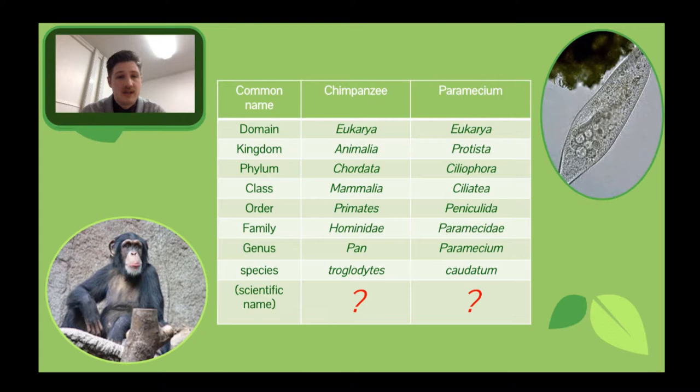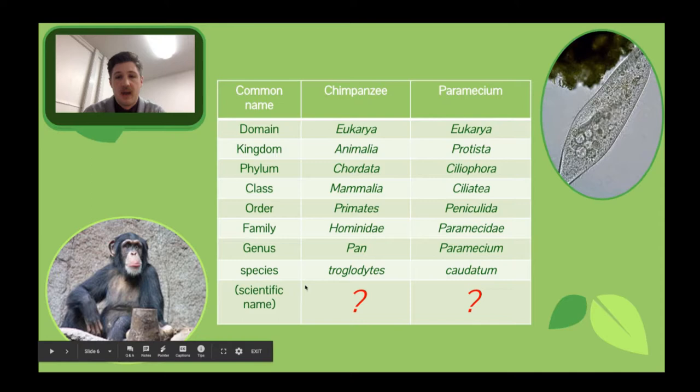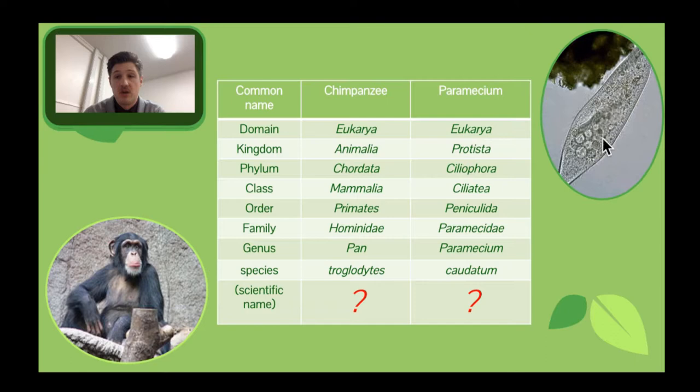So what are the scientific names of these two animals? Here we have our friendly chimp and this amoeba-looking thing. For our chimpanzee we have Pan troglodytes — Pan is the genus and troglodytes is the species. For our amoeba-looking single-celled organism we've got Paramecium caudatum — Paramecium is the genus with a capital, caudatum is the species.